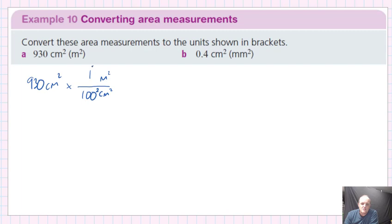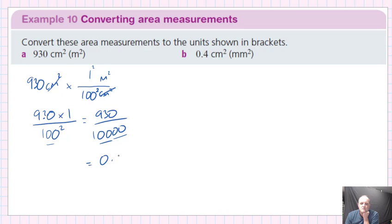1 squared is just going to become 1. So our calculation, because we lose our centimeters squared, becomes 930 times by 1 all over 100 squared. That's going to be 930 divided by 10,000, so we've got 2 lots of 2 zeros because we've got the 2 zeros squared, so that's going to become 0.093 square meters.